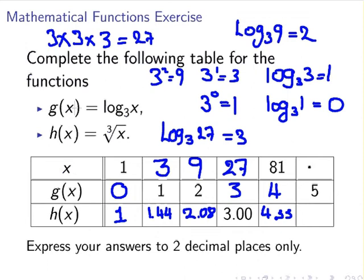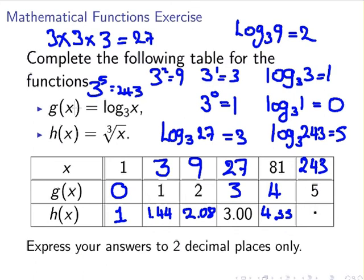Finally, what value do we get? What number to the base 3 would have a logarithm of 5? That is 243. Log to the base 3 of 243 equals 5. Or in other words, 3 to the power of 5 gives you 243. What is the cube root of 243? To two decimal places, that's 6.24.